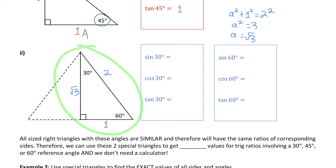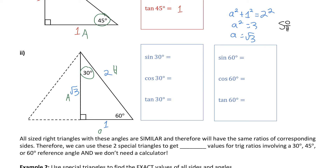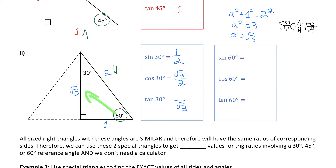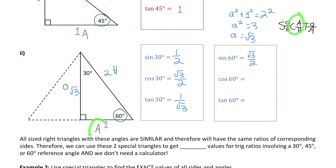We can find the third side using the Pythagorean theorem: a squared plus 1 squared equals 2 squared, so a squared equals 3, which means a is root 3. So the height of that triangle is root 3. Now that I have all the dimensions, I can find exact values of sine, cosine, and tan for both 30 and 60 degrees. For the 30 degree reference angle: opposite is 1, adjacent is root 3, hypotenuse is 2. So sine of 30 is one half, cosine of 30 is root 3 over 2, and tan of 30 is 1 over root 3. For the 60 degree reference angle: opposite is root 3, adjacent is 1. Sine of 60 is root 3 over 2, cosine of 60 is one half, and tan of 60 is root 3 over 1, which is just root 3.